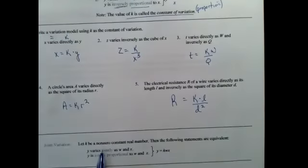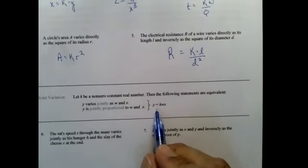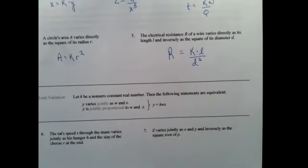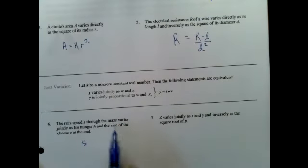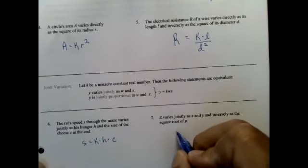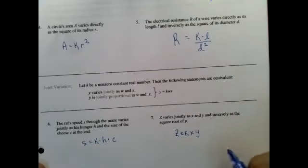Directly and inversely. We also have something called jointly proportional. And as you see, just like we've been talking about before, that means there's going to be multiple things in the numerator times that k. The rat's speed s through a maze varies jointly, so that's times, the hunger and the cheese at the end. The hungrier it is, the faster it's going to go. The cheesier the cheese at the end, the bigger the size, the faster it's going to go. z varies jointly as x and y and inversely as the square root of p. All right, look at that. We've covered a whole page in seven minutes. Hope there's some problems to do. Yes, me too, and there are.